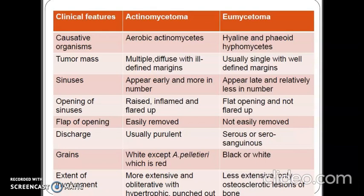The grains are usually white except in actinomycetoma pelletieri which are red, and can be black or white in eumycetoma. These grains or granules are microcolonies of the etiological agents and their demonstration is of diagnostic value. The extent of involvement is more extensive in actinomycetoma whereas in eumycetoma it is less extensive and limited to osteosclerotic lesions of bone.